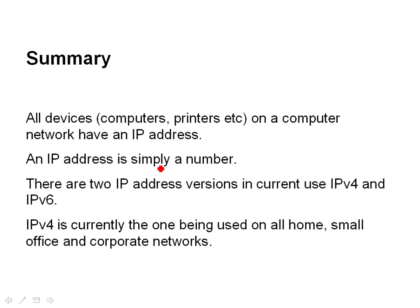Just a quick summary: all devices on a computer network have an IP address. An IP address is simply a number. There are two IP address versions in current use — IP 4, the most common one, and IP version 6. You'll find most modern devices will have an IP 4 address and an IP 6 address. IP 4 is currently the one being used on home, small office, and corporate networks.